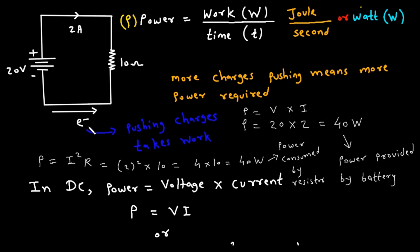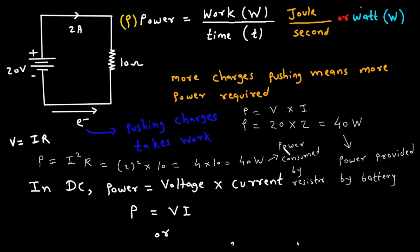There is one more formula to calculate power and it is P equal to I square into R. Where this I square comes from — according to Ohm's law, we know that V is equal to I into R. So in place of V, if we substitute IR, then we get this formula. The value of current is 2 Ampere, so 2 square into resistance value of 10 Ohm gives us 40W. This is the power which is consumed by the resistor.